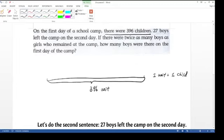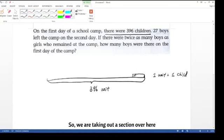Okay, let's do the second sentence. 27 boys left the camp on the second day. So we are taking out a section over here. And how many units in the section? 27 units.